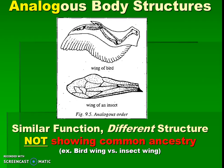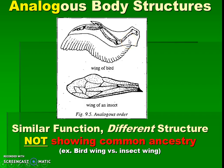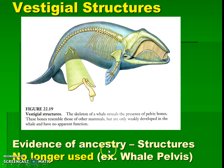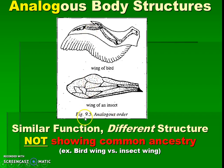That's pretty much the opposite of analogous structures. Analogous sounds like the word analogy, meaning they seem similar but aren't exactly the same. These are both wings, but the internal structure is very different. A bird wing has bones, but an insect wing does not. Insects are very distantly related to birds — they both have a common ancestor way back, but it's not very recent at all. Because these internal structures are so different, even though they seem like an analogy because they're both wings, they're actually not showing common ancestry. Similar job, but actually pretty different — not a common ancestor.